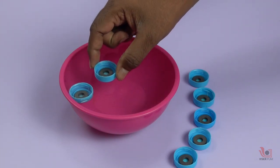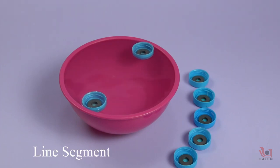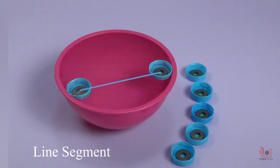When we place the second magnet in the water bowl, you can see they are repelling each other due to magnetic repulsion and they go away from each other. If you join the centers of the two magnets, you will get a line segment.